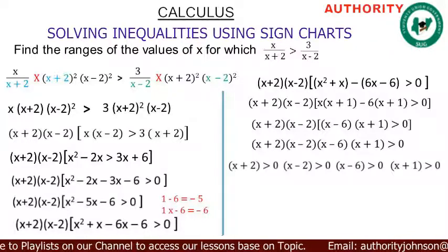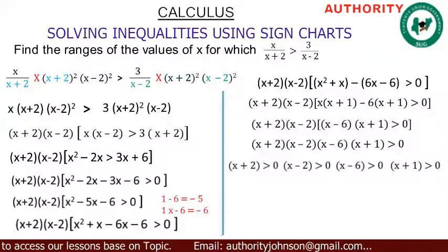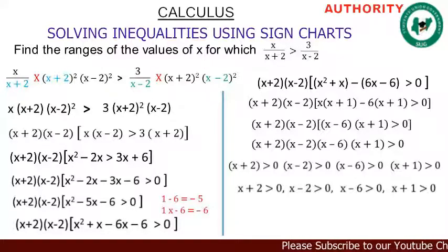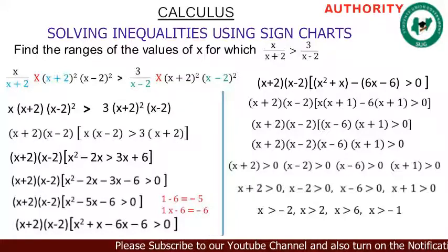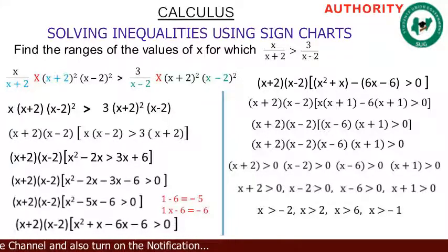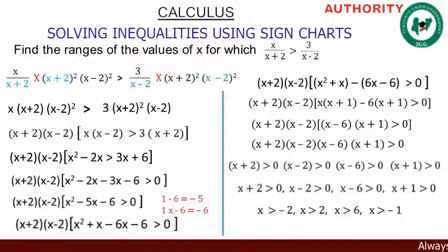Now we solve each factor individually: x+2 > 0 gives x > -2; x-2 > 0 gives x > 2; x-6 > 0 gives x > 6; x+1 > 0 gives x > -1. So we end up with four critical values: -2, 2, 6, and -1.